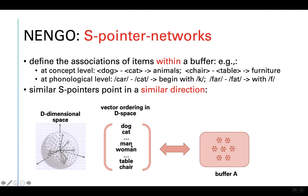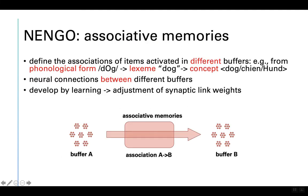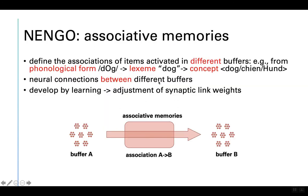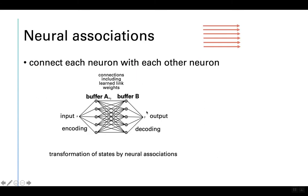Keep in mind that S-pointer networks are a different concept from associative memories. S-pointer networks work within one level, while associative memories represent associations between different buffers or different levels of the model.